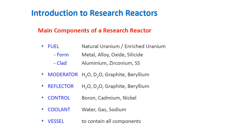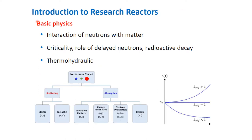For example, in the Philippine Research Reactor One, the fuel is a uranium-zirconium hydride fuel. For moderators, you can use light water, heavy water, graphite, or beryllium. The same materials are used as reflectors, and you can use any combination of both. For control rods, you can use boron, cadmium, and nickel. For the coolant, you can use water, gas, or sodium. The vessel contains all components.